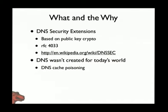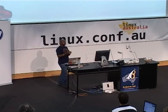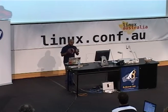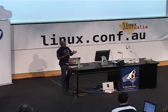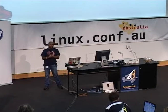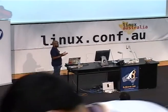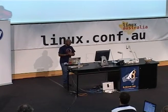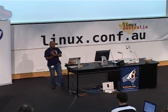It's based on public key cryptography, very much like SSH keys. RFC 4033, 4034, 4035, and a bunch of surrounding RFCs explain this in great detail, but the Wikipedia entry is a good start to sink your teeth into DNSSEC. The main reason is that DNS wasn't created for today's world. We know about the various attacks happening to DNS — cache poisoning being one of the major things that DNSSEC will definitely help mitigate.